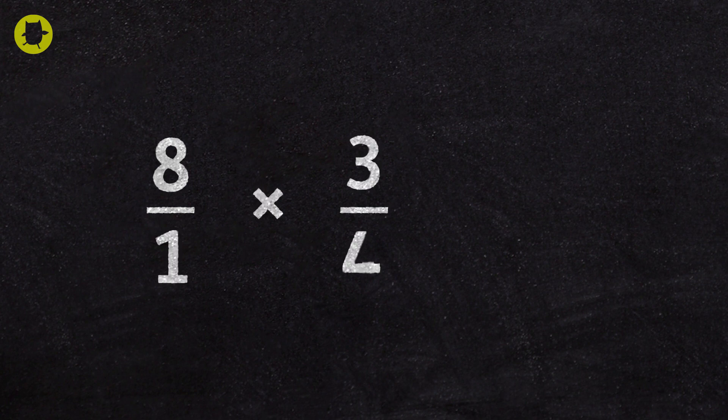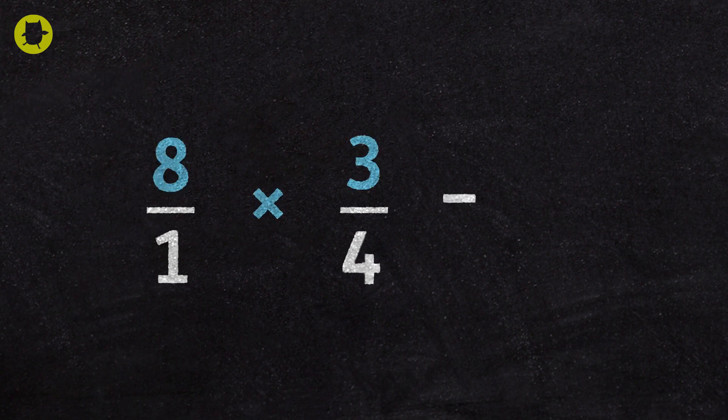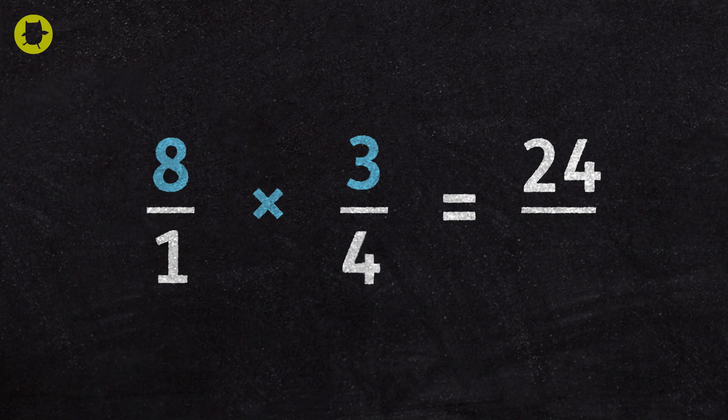Then we multiply the numerators and the denominators. First, multiply the numerators. Then multiply the denominators.